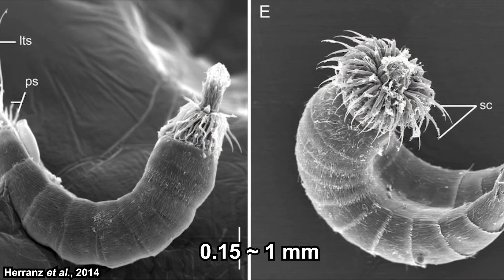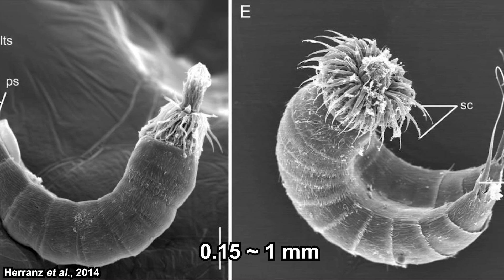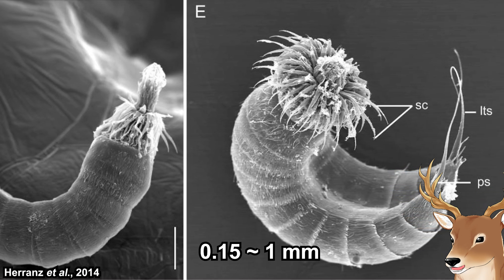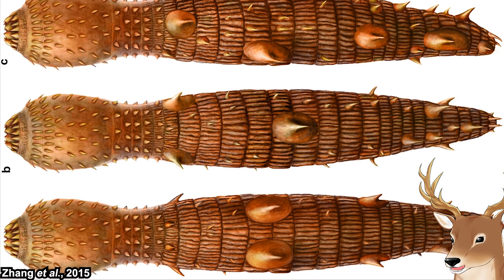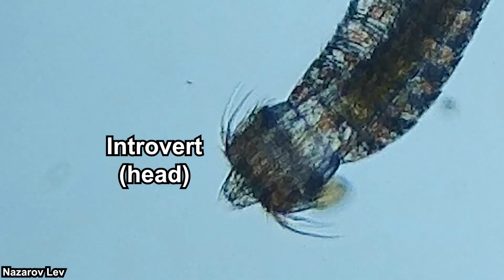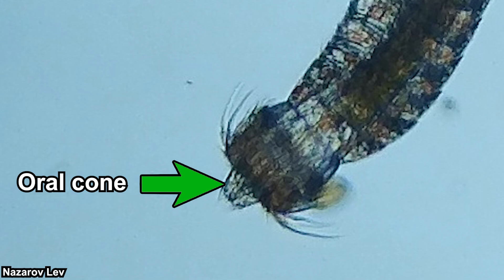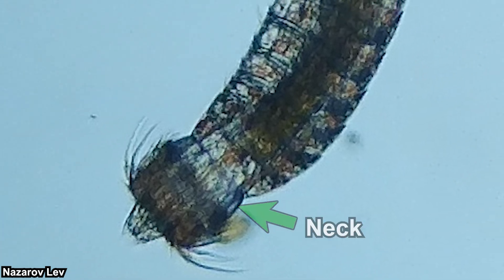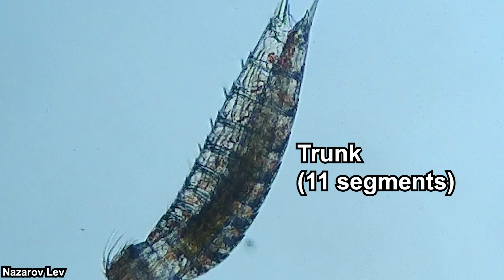Let's talk about their morphology. They are small, typically only half a millimeter, though some can reach one millimeter. They were once bigger, but that was half a billion years ago. In general, a mud dragon's body can be divided into three parts: the anterior is called the introvert, which is their eversible head, bearing a protrusible mouth cone called the oral cone. Behind the oral cone are several rings of spines called scalids or scalets. Behind their head is their neck, and the rest of their body consists of 11 segments called the trunk — 13 segments in total.